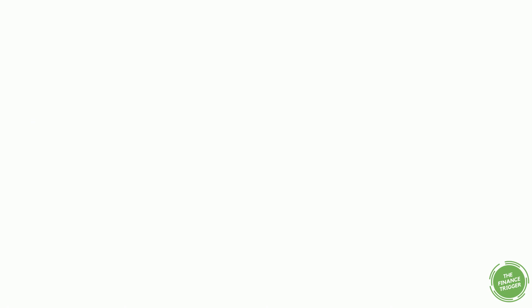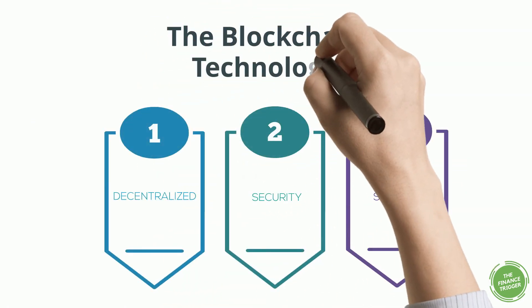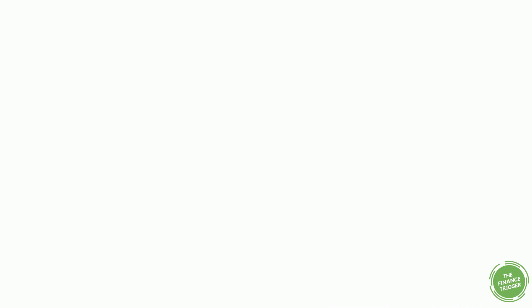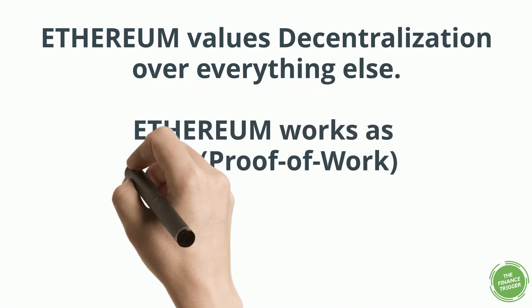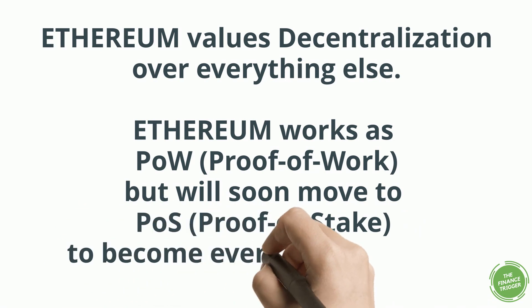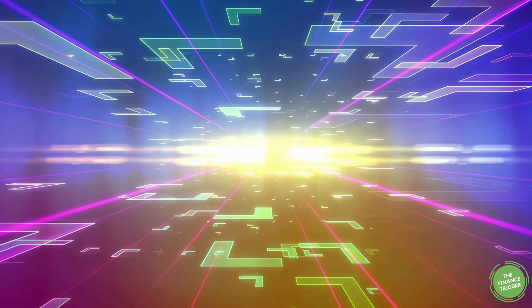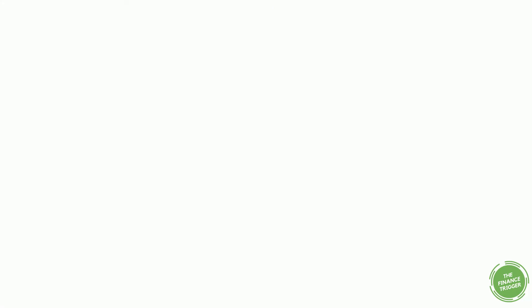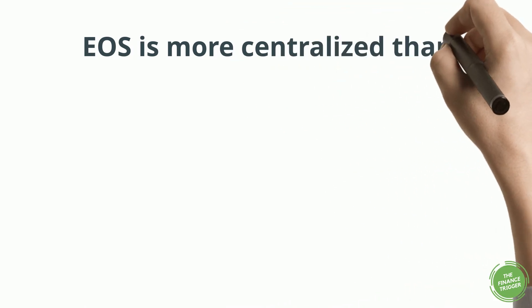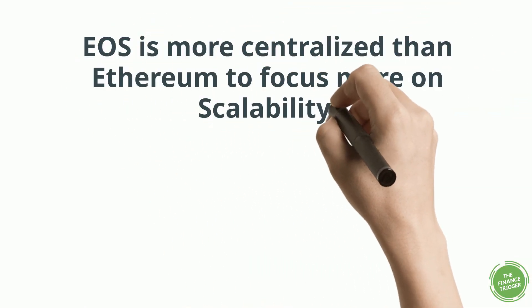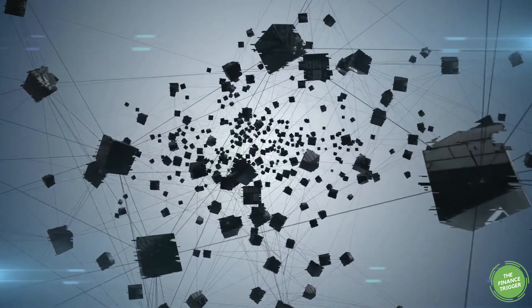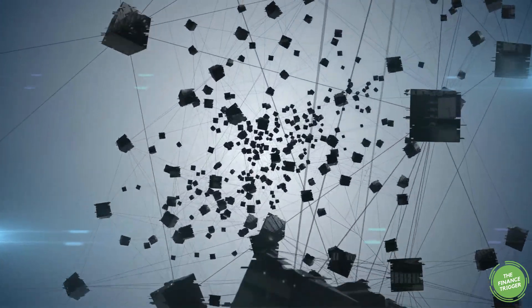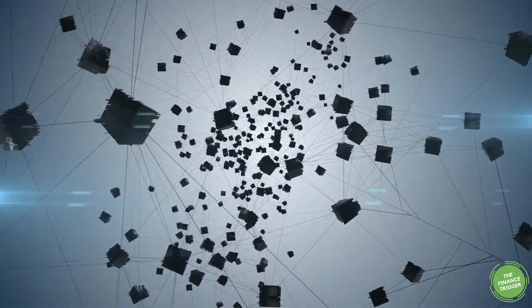Blockchain technologies focus on three main characteristics: security, decentralization, and scalability. Ethereum has great security and values decentralization above everything else. The platform currently uses a proof-of-work consensus algorithm and limits the number of blocks produced, remaining the dominant decentralized platform for the near future. EOS is more centralized for the sake of improved scalability. The platform uses DPoS, or delegated proof-of-stake, where 21 nodes produce new blocks — no more, no less — giving EOS a higher level of centralization and improved scalability.